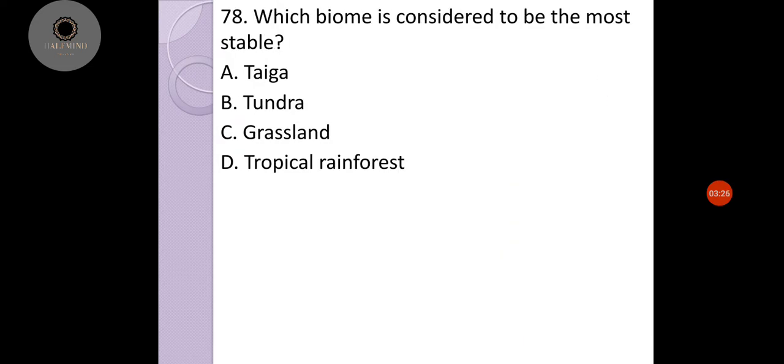Number 78: Which biome is considered to be the most stable? Is it taiga, tundra, grassland, or tropical rainforest? Our answer here is letter D, tropical rainforest. One proof that the tropical rainforest is considered the most stable biome is the diversity of organisms found there. When a biome is very diverse, that means that biome can sustain and provide what's needed by the organisms in that particular biome. One proof that a biome is stable is its organism's diversity.